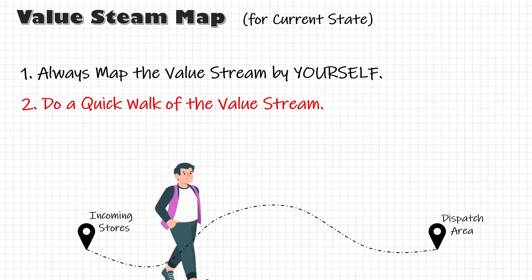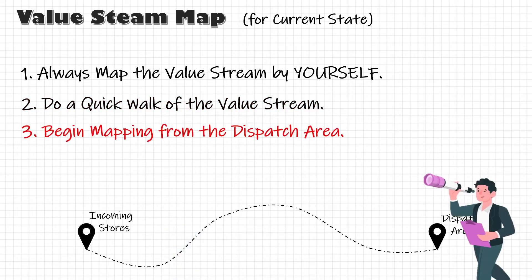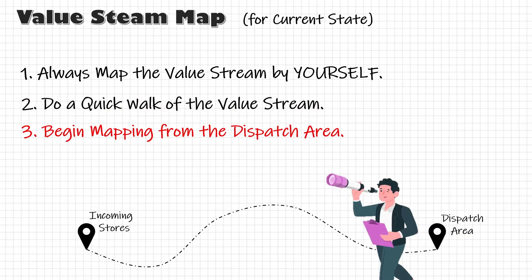At number three, you can begin from the dispatch area and start to map upstream. In this way, you can begin with the process that is linked directly to the customers. Okay, let's start.